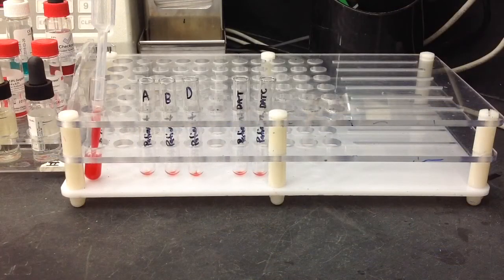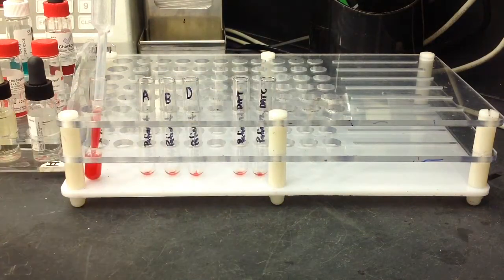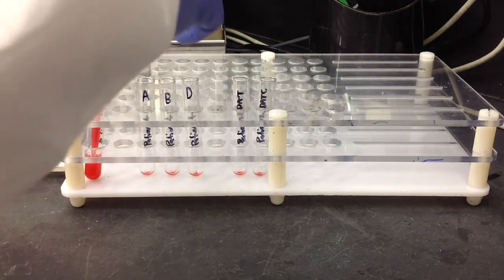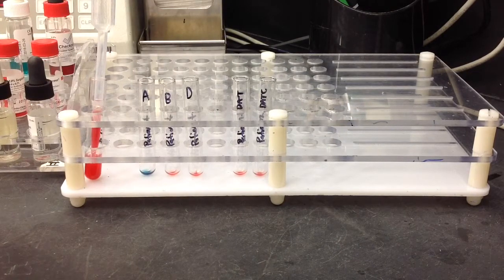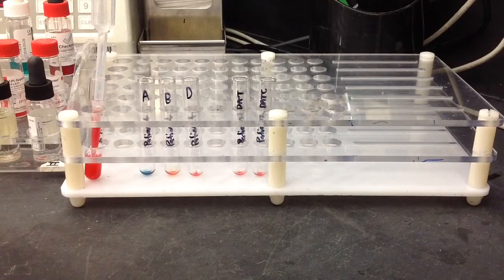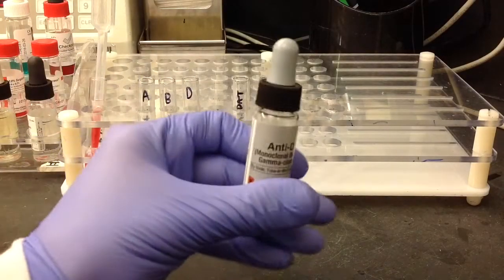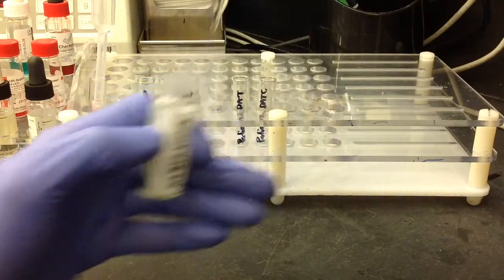After the washing is complete, I'm going to start with the ABORH portion. And I'm just going to add one drop of each of the antiseras into the corresponding tubes that I have labeled. So just one drop of the A, the B, and then finally, just one drop of the D antiserum.